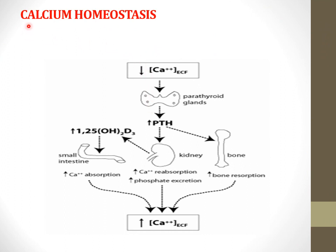Here we will see calcium homeostasis — how the calcium level in extracellular fluid is maintained. When there is a decrease in calcium in extracellular fluid, it stimulates the parathyroid gland to produce more parathyroid hormone. This hormone affects the bone and causes calcium resorption from the bone, leading to an increase in extracellular calcium level.